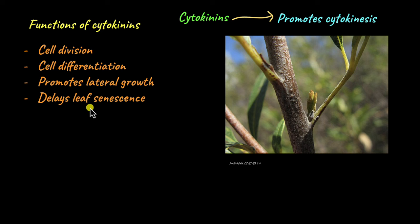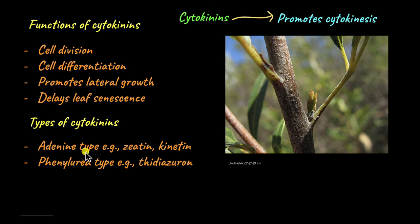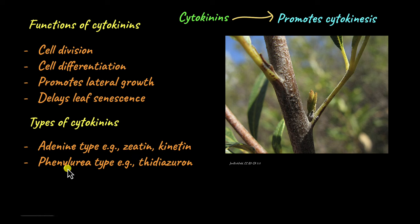Like gibberellins, cytokinins also delay leaf senescence — they make sure that the leaf stays attached to the plant for a longer period of time. There are different types of cytokinins. The adenine type includes zeatin and kinetin. Although kinetin was the first cytokinin to be discovered, it was not discovered from plants — it was discovered from herring sperm DNA. Zeatin is what naturally occurs in plants. There is another type, the phenylurea type, with an example being thidiazuron, which also does not naturally occur in plants.